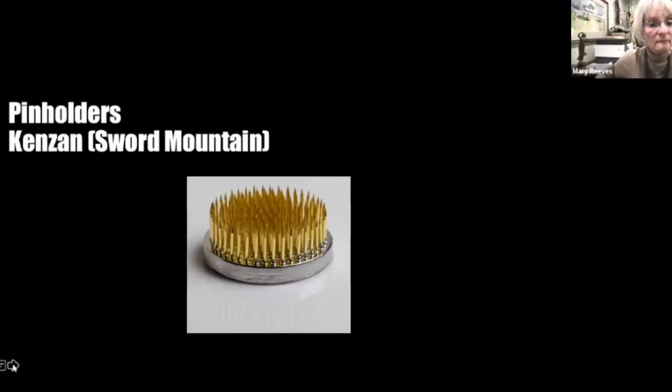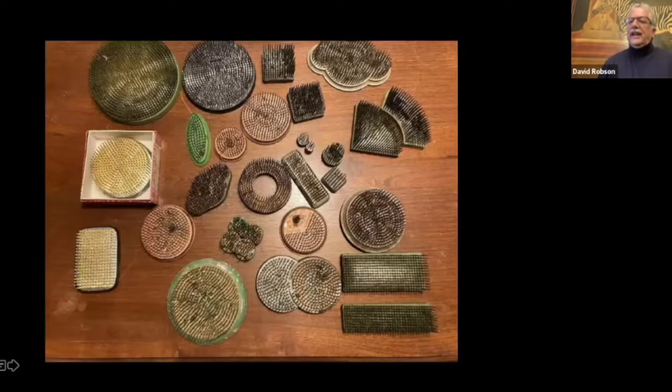The most common one we have are the pin holders. In Japanese Ikebana they call it Kenzan, which means sword mountain. There are a bunch of little pins, either brass, iron, or lead. Lots of different things used as pin holders. This is an example of some of the different shapes and sizes.